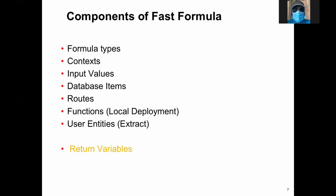Database items are basically like global variables — predefined variables that hold values. For example, first name, last name, full name — these are the database item names. One database item can hold one value, or there will be multiple values of the same type available in an array. There are two types of database items: arrays, which we call range, and single values.